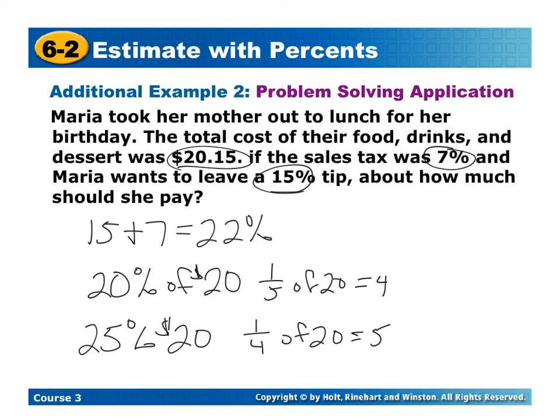So either way here, you would choose one of those numbers, add it back to the $20. So you're going to pay somewhere between $24 to $25 is how much she should leave.